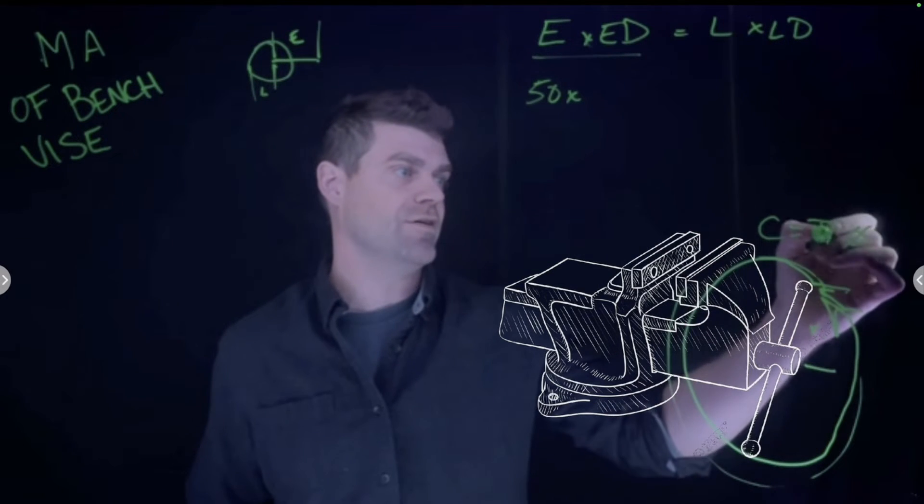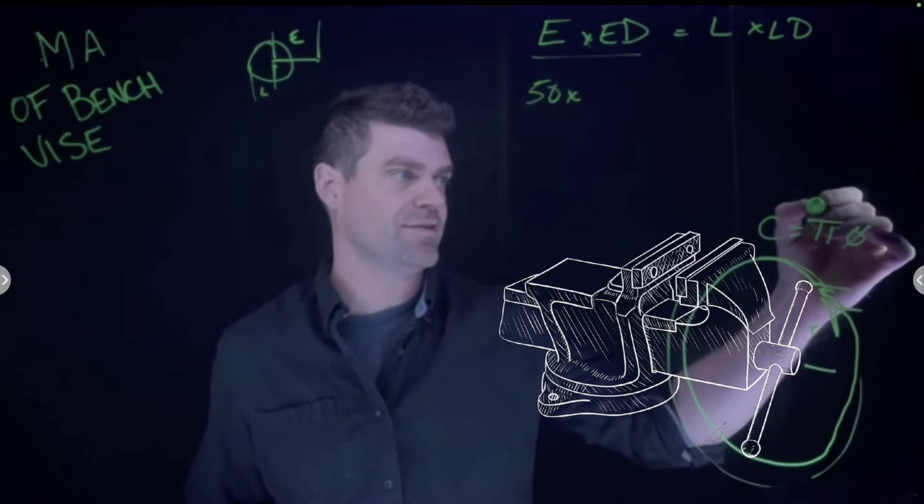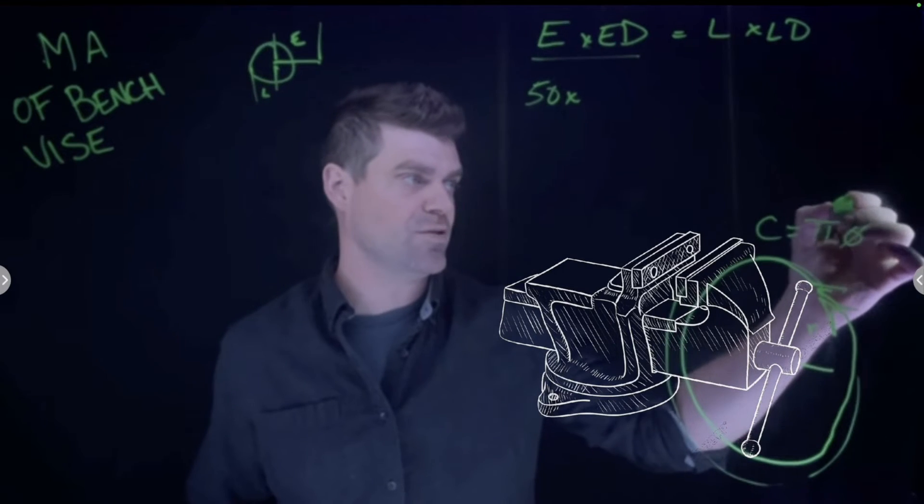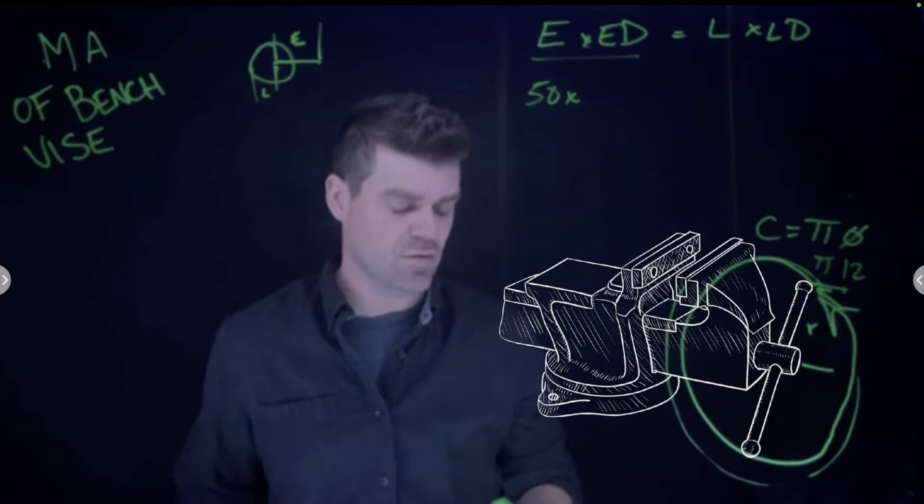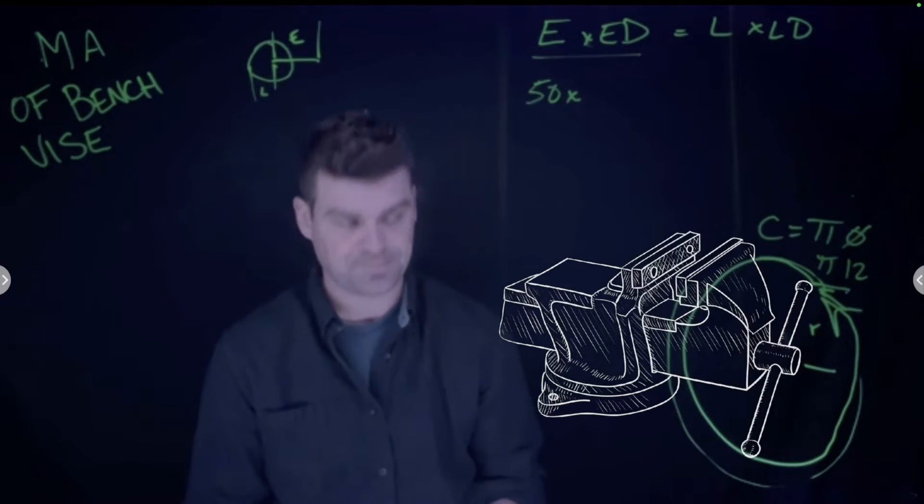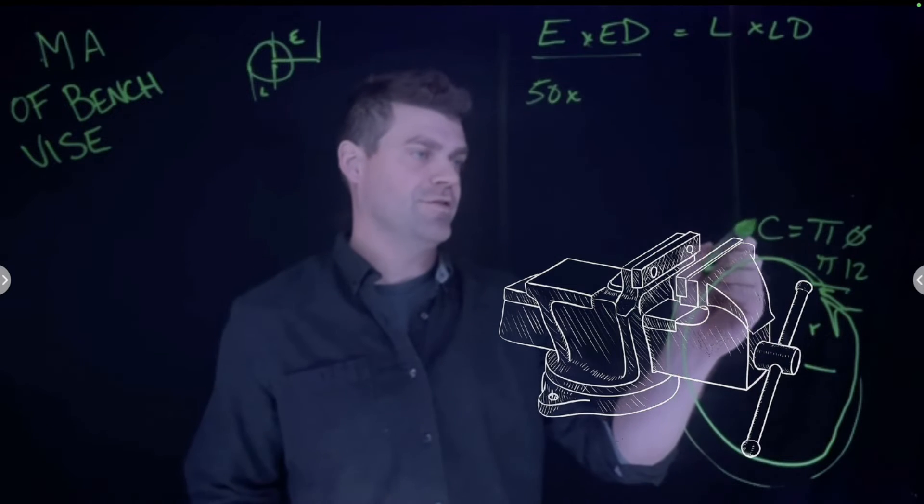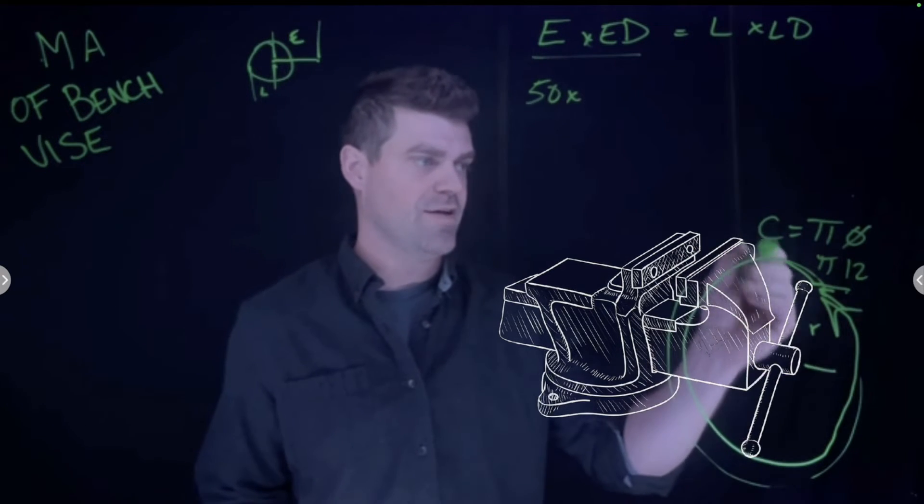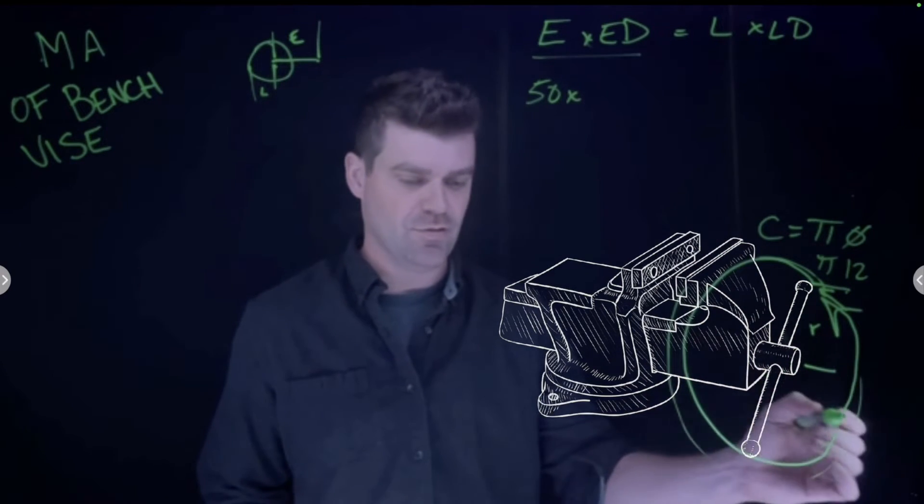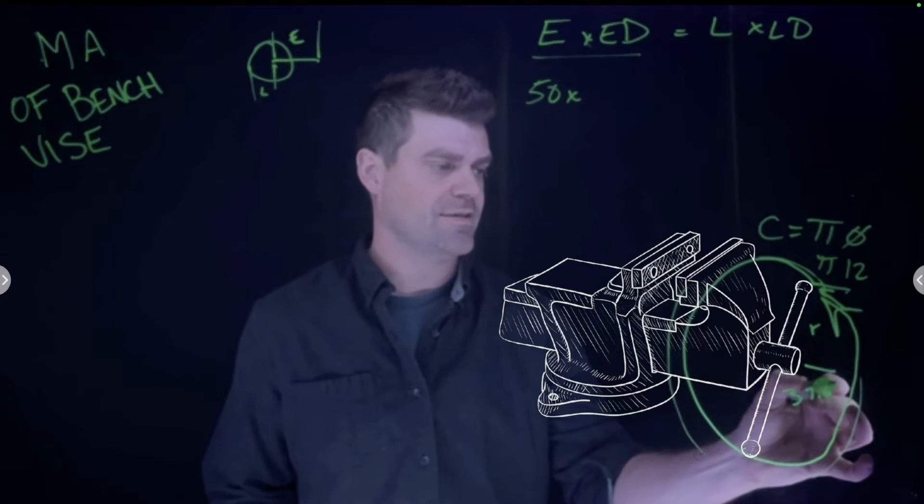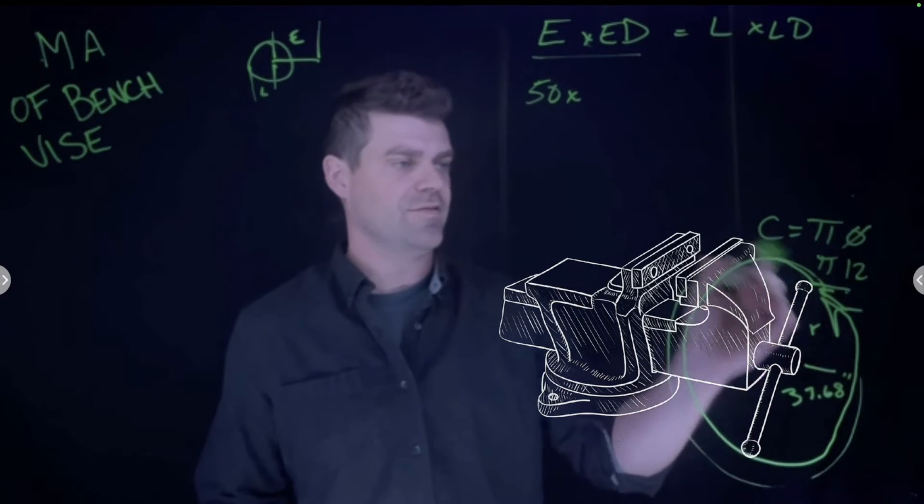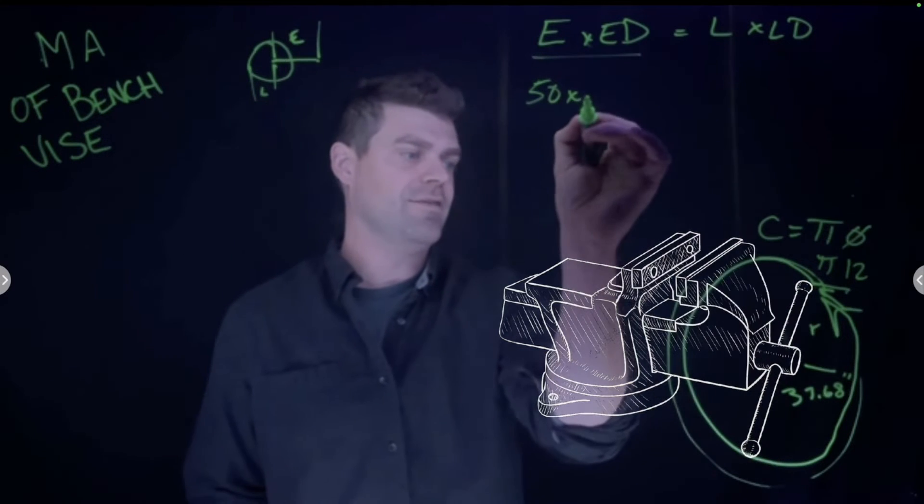So if it's a six-inch radius, the diameter would be 12 inches times pi. The circumference and the distance that we travel is going to be equivalent to 37.68 inches. That's how far it goes all the way around. We'll plug that in for our effort distance.